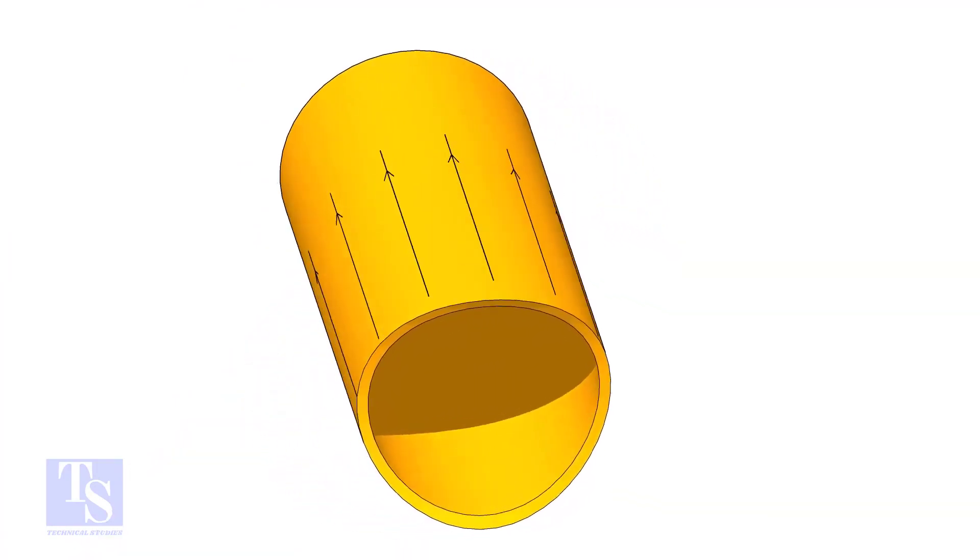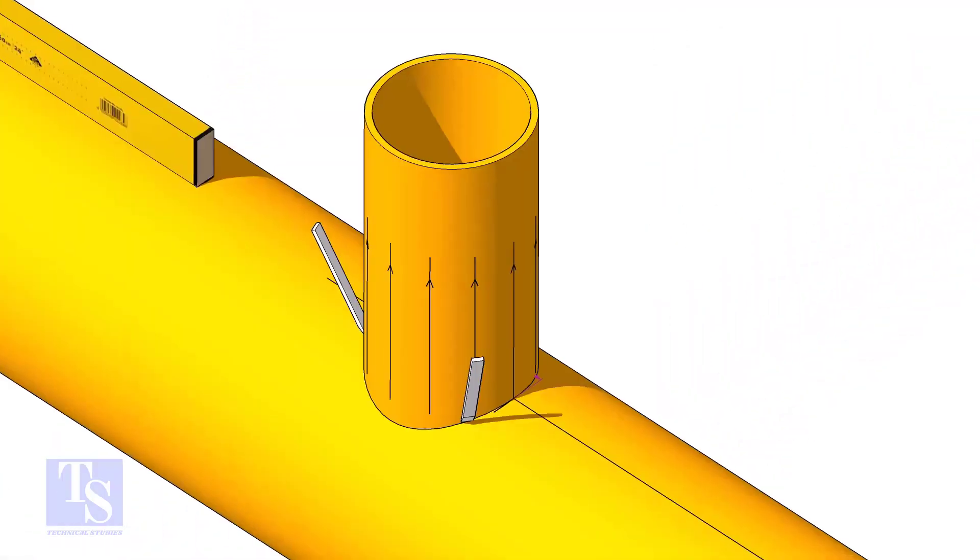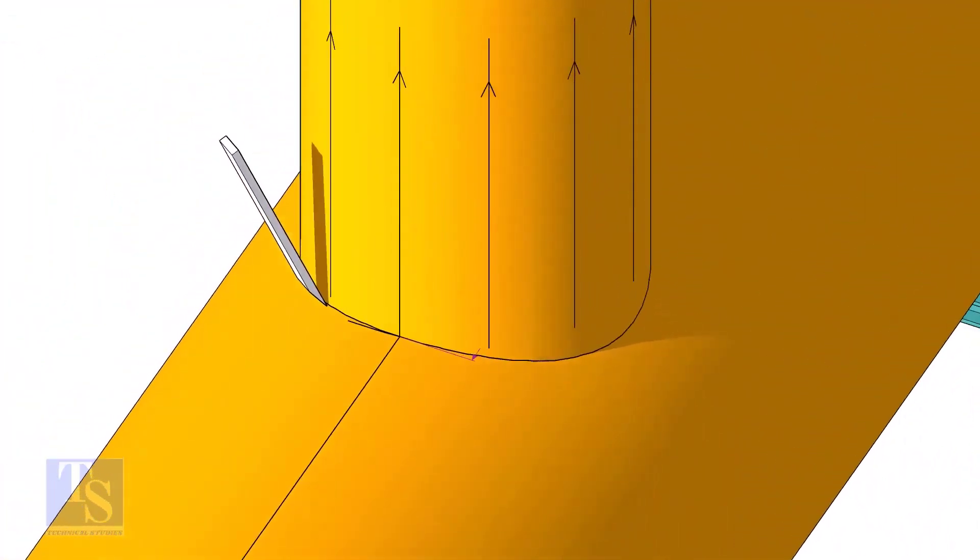After cutting and grinding the notch on the branch pipe, put it on the header. Make sure it is exactly in its position and mark the opening on the header as shown.